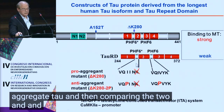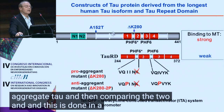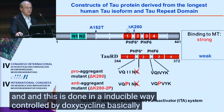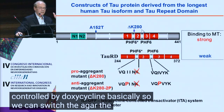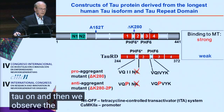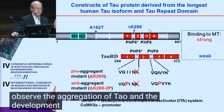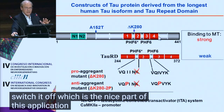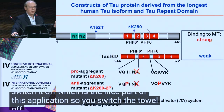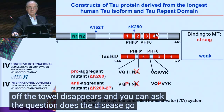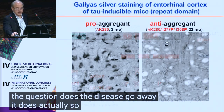This is done in an inducible way, controlled by doxycycline. We can switch the expression of tau on and observe the aggregation of tau and the development of pathology. We can also switch it off, which is a nice feature. When you switch tau off, the tau disappears, and you can ask: does the disease go away? It does, actually.